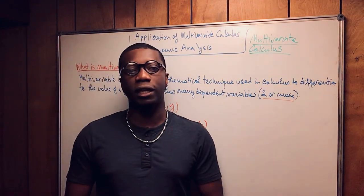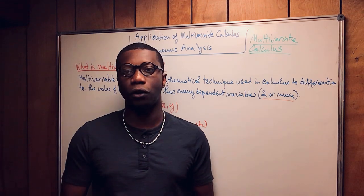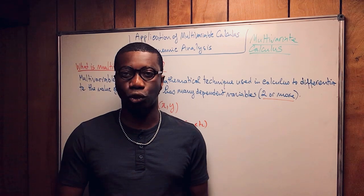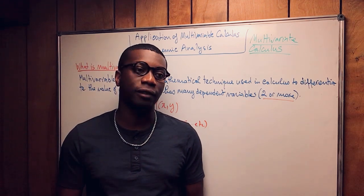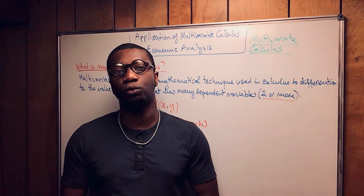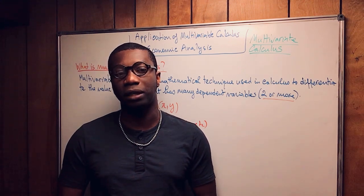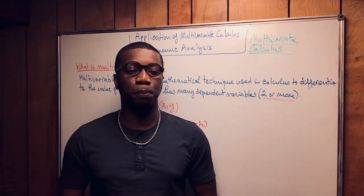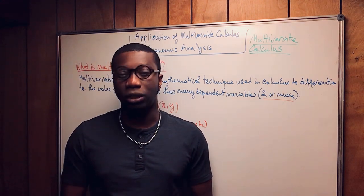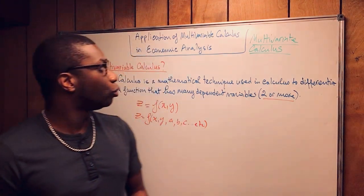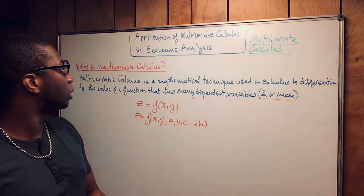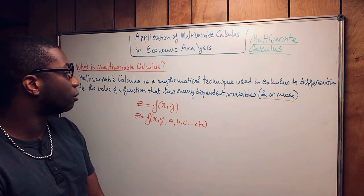It is used in microeconomics by firms to do optimization — constrained and unconstrained optimization. In macroeconomics, it is used to determine economic indicators. If people want to calculate not just the GDP but also the GNP, they use multivariable calculus. So you see that it is very important to understand how multivariable calculus works.